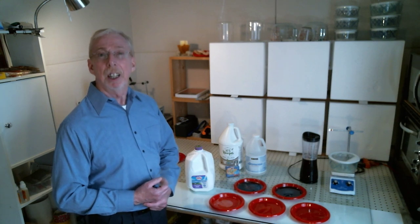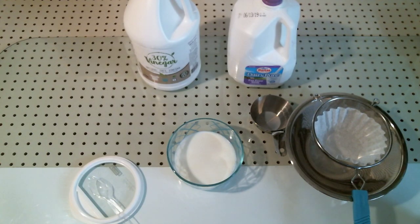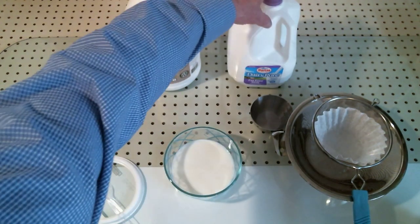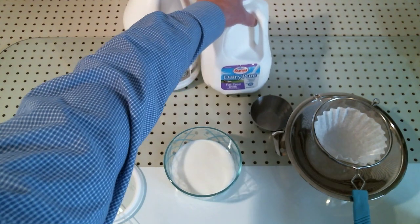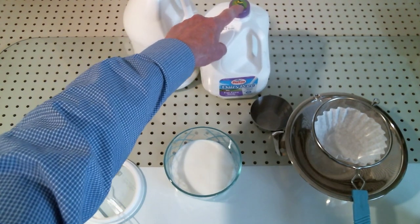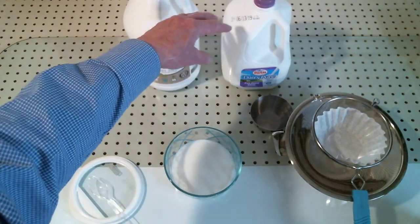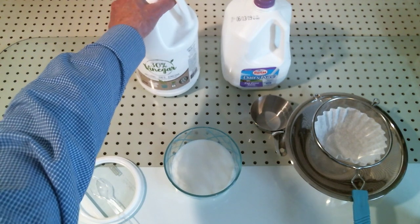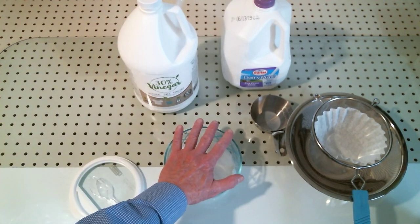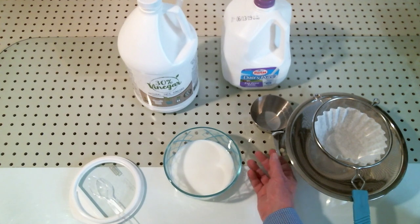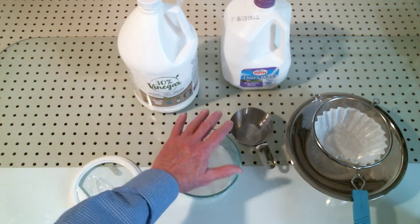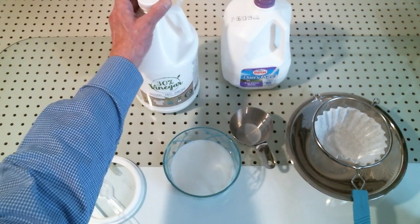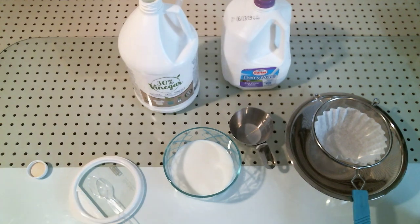Alright, let's get started. The first step in making the sustainable embossing powder is we want to begin with milk, and fat-free milk is best. That way we don't have to deal with fats and sugars in the milk and rinsing that out. We're going to warm it. It's been warmed in the microwave. I added one cup. Of course you can make more. The measurements are simply not that critical.